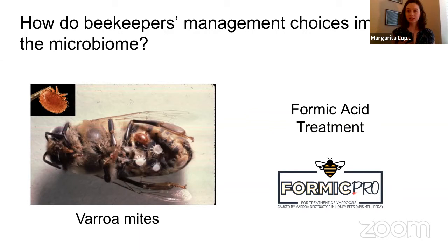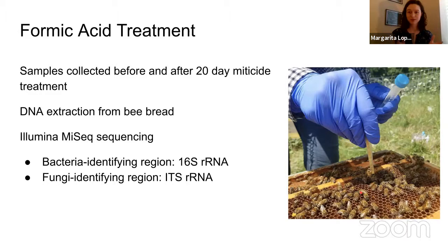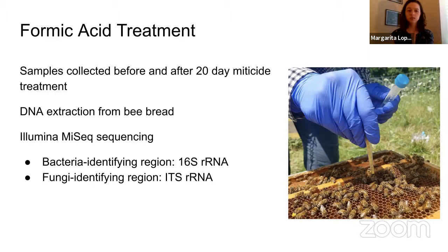We set up an experiment using Formic Pro and collected samples of bee bread from the colonies both before and after a 20-day treatment with the Formic Pro miticide. As you can see in the picture, we used sterile tubes to collect all those layers of bee bread and then brought that back to the lab to extract the DNA. We characterized the microbiome found in that bee bread using an Illumina MiSeq sequencing process, using the 16S ribosomal RNA region to identify the bacteria and the ITS region of the ribosomal RNA to identify the fungi.